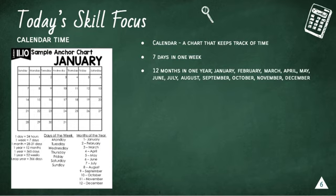There are 12 months in one year. The year starts with January. Then there's February, March, April, May, June, July, August, September, October, November, and finally December.